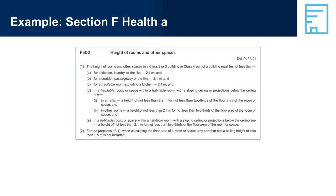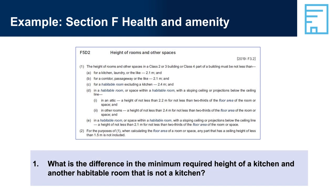Example — Section F Health and Amenity, Question 1: What is the difference in the minimum required height of a kitchen and another habitable room that is not a kitchen? The minimum height of a kitchen is 2.1 metres, while the minimum height of a habitable room that is not a kitchen is 2.4 metres — so the difference is 0.3 of a metre.